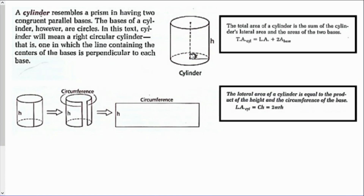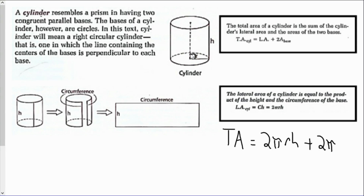The total area of a cylinder is the sum of the cylinder's lateral area and the areas of the two bases. In a cylinder, the lateral area, if I unravel it, gives me a rectangle where one dimension is height and the other is the circumference of the cylinder. The area of the two bases is 2πr². So the lateral area equals 2πrh, and the total area of a cylinder is 2πrh + 2πr², where r is the radius and h is the height.